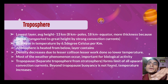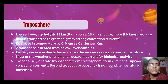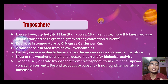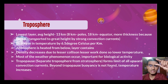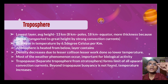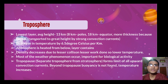Most of the weather phenomena occur in the troposphere. There are many biological activities, chemical and biochemical reactions in troposphere. The troposphere and stratosphere together form upward convection currents — beyond the troposphere, buoyancy is not found. When troposphere is over, that means air does not bounce upward — because temperature is actually increasing there.